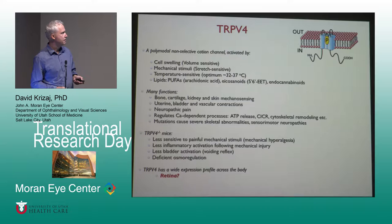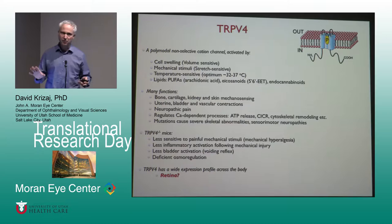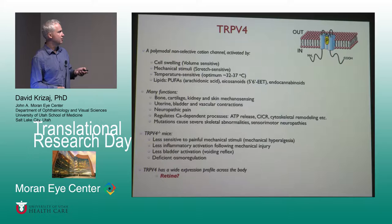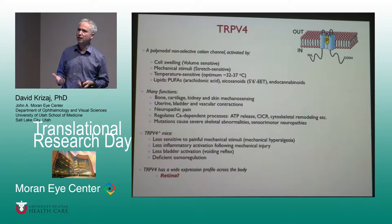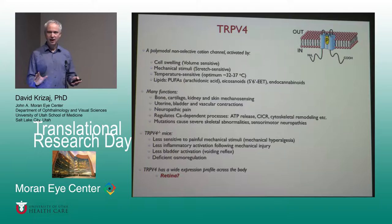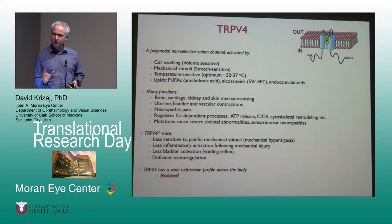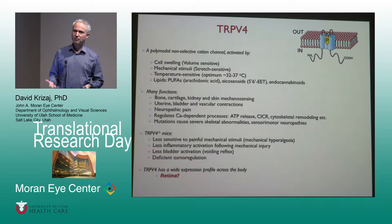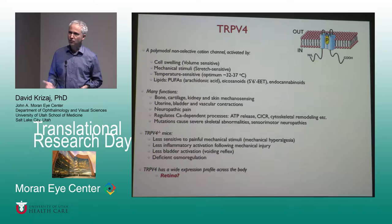TRPV4 is also sensitive to temperature and lipids such as arachidonic acid. It's expressed all over the body, especially in tissues that are load-bearing and stretch-sensitive, such as the bladder. It regulates uterine, vascular, and bladder contractions, and has been associated with mechanical hyperalgesia during neuropathic pain. The TRPV4 knockout mice were shown to be less sensitive to painful stimuli and show less inflammatory responses during mechanical injury. It is a very interesting candidate to evaluate in a mechanical force-related disease such as glaucoma.